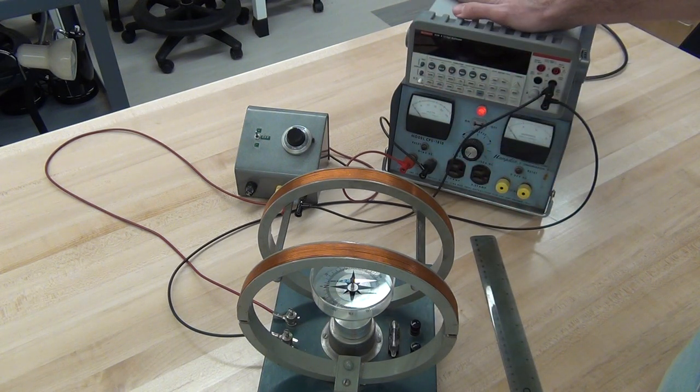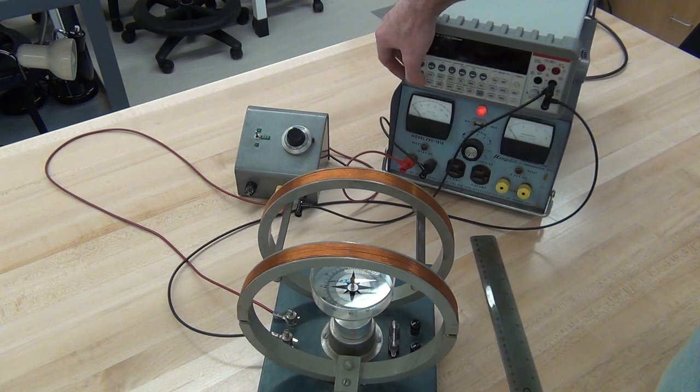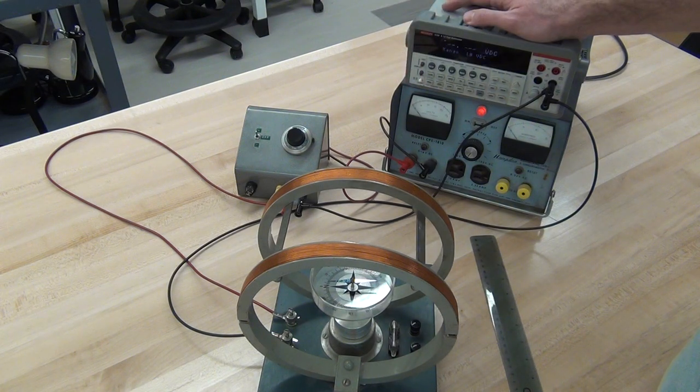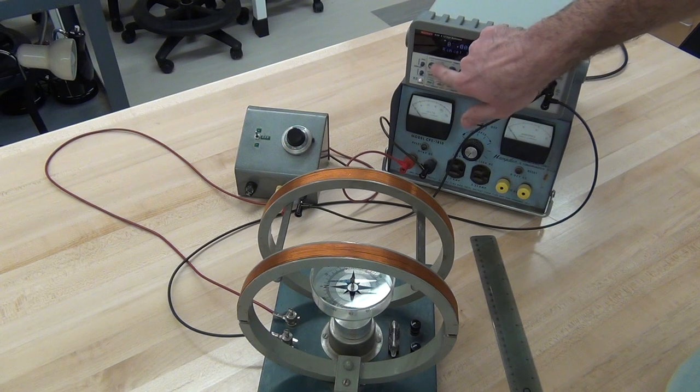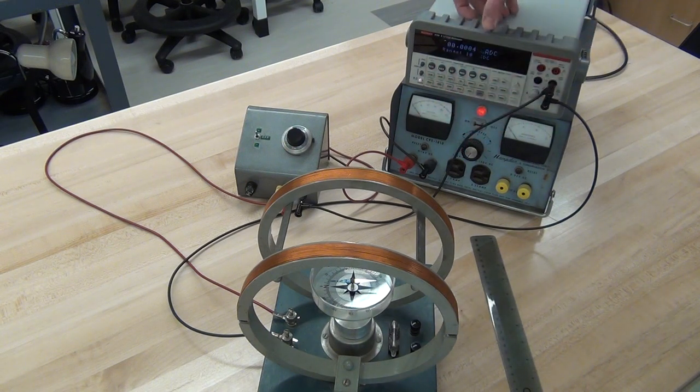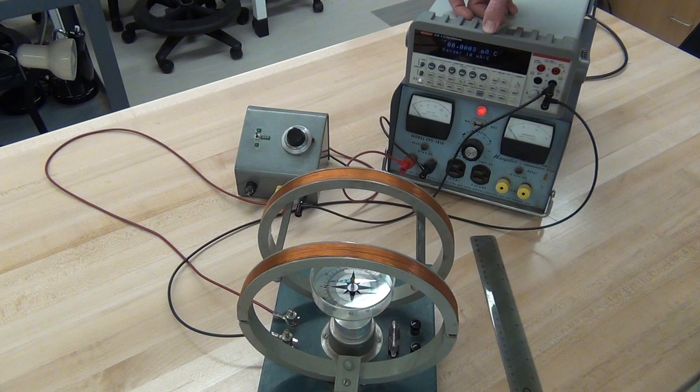We'll measure everything with our Keithley, and we'll use it in current mode. So we'll want to turn it on, shift, and the DCV button sends it into DCI. You'll know you're measuring current when you have milliamps for your units.